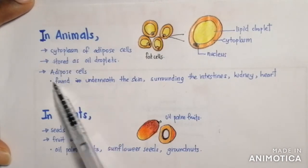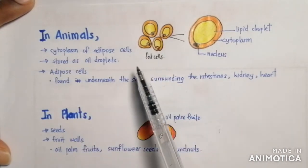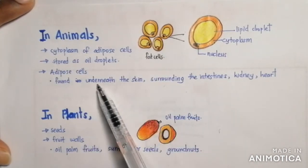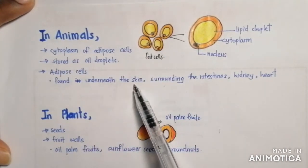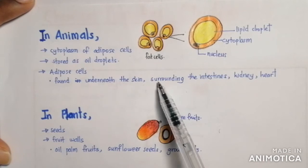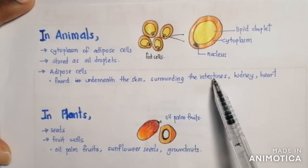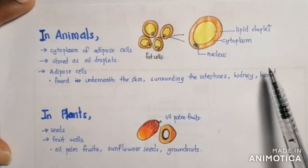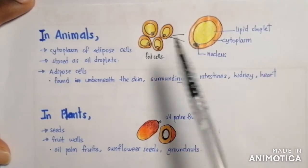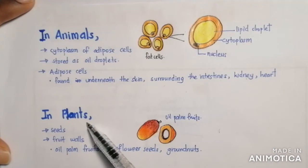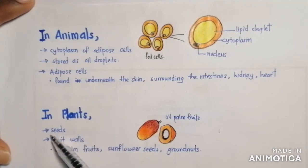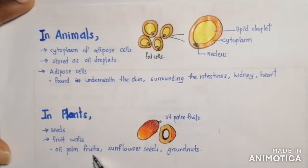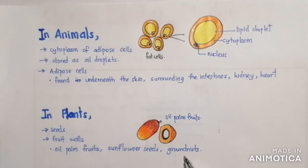Adipose cells can be found underneath our skin, surrounding the intestines, kidney, and heart. In plants, triglycerides are found in seeds, fruit flesh, oil palm fruits, sunflower seeds, and groundnuts.